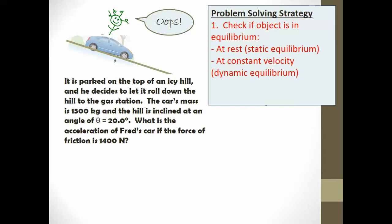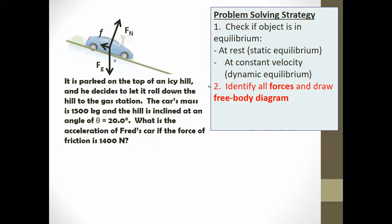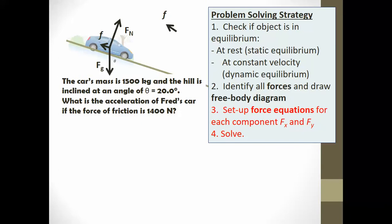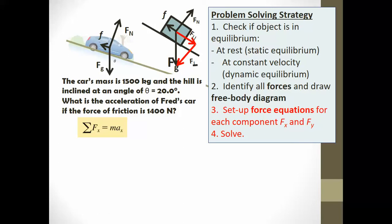Coming back to Fred's problem: first, is the object in equilibrium? No, it's accelerating down the inclined plane, so the sum of forces equals MA, not zero. We identify forces and draw a free body diagram, remembering that F_g must be broken into F_parallel and F_perpendicular. Summing forces in the x-direction: F_parallel minus the force of friction equals mass times acceleration in x. So mg·sin(θ) minus friction equals m·a.